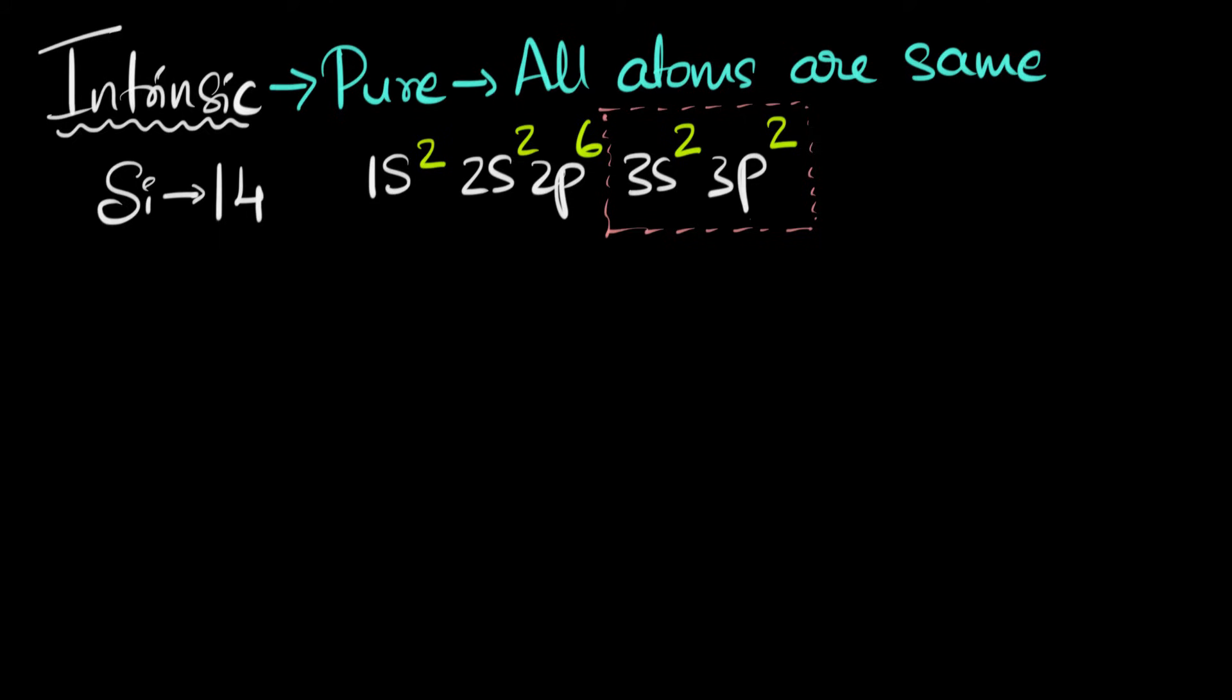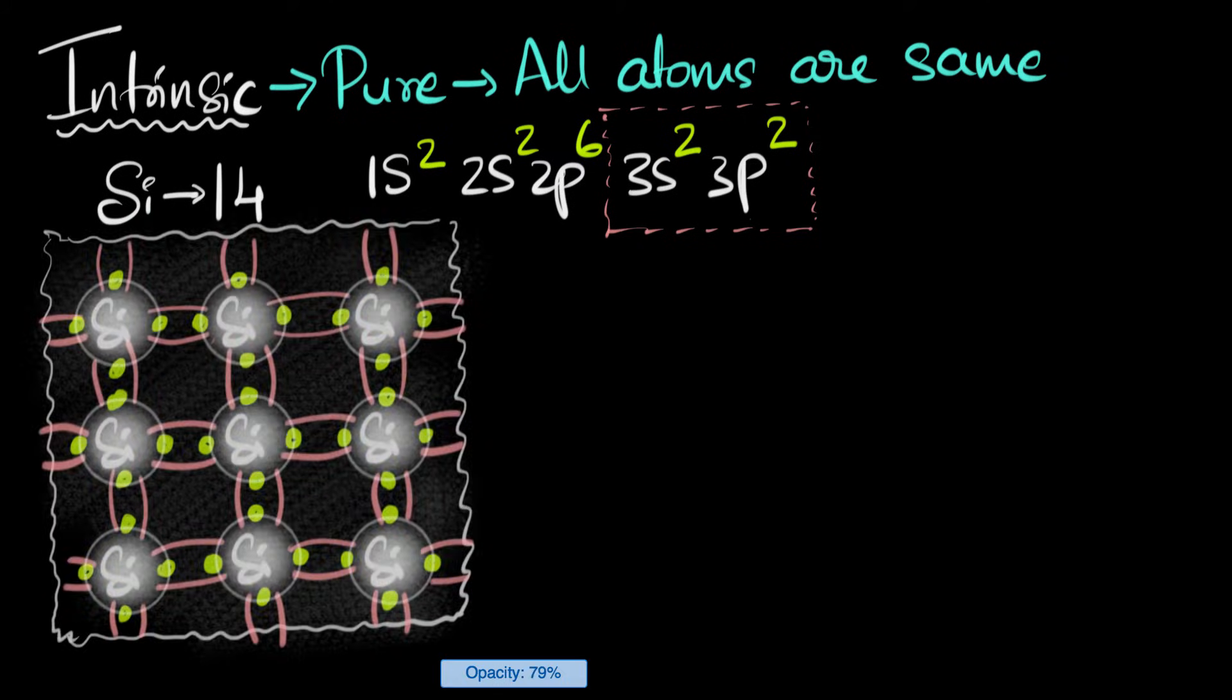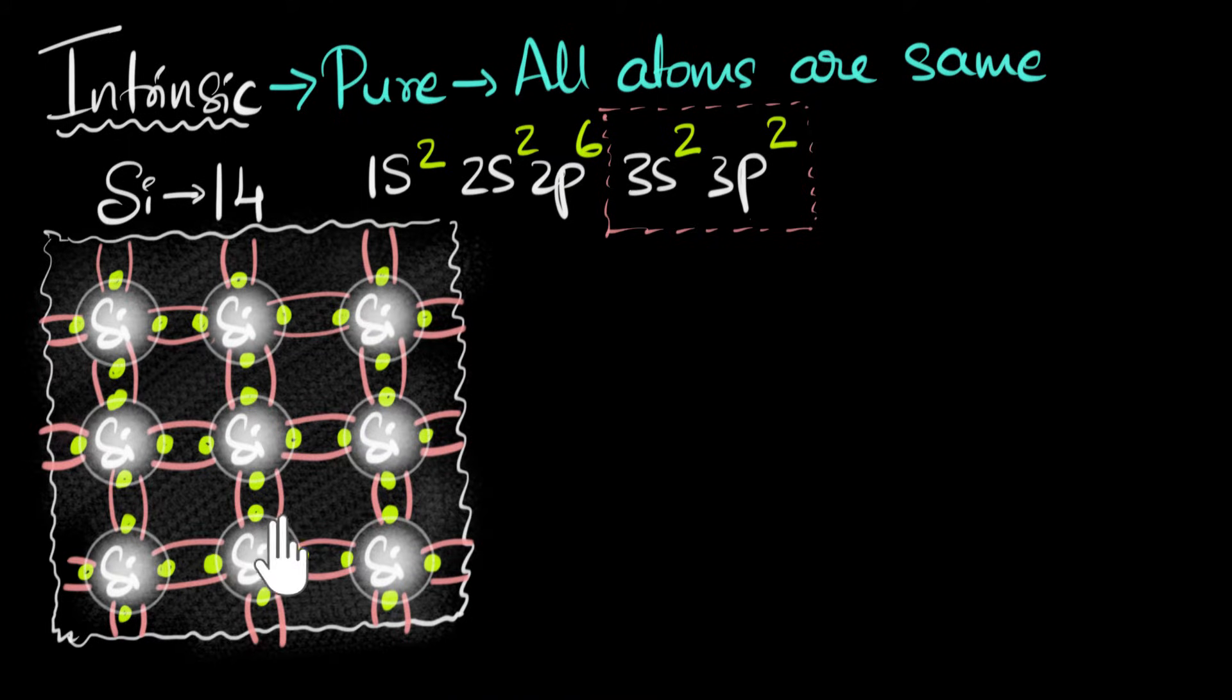And so if you could see that, it might look somewhat like this. So here it is. I'm going to draw these silicon atoms which are covalently bonded with each other.